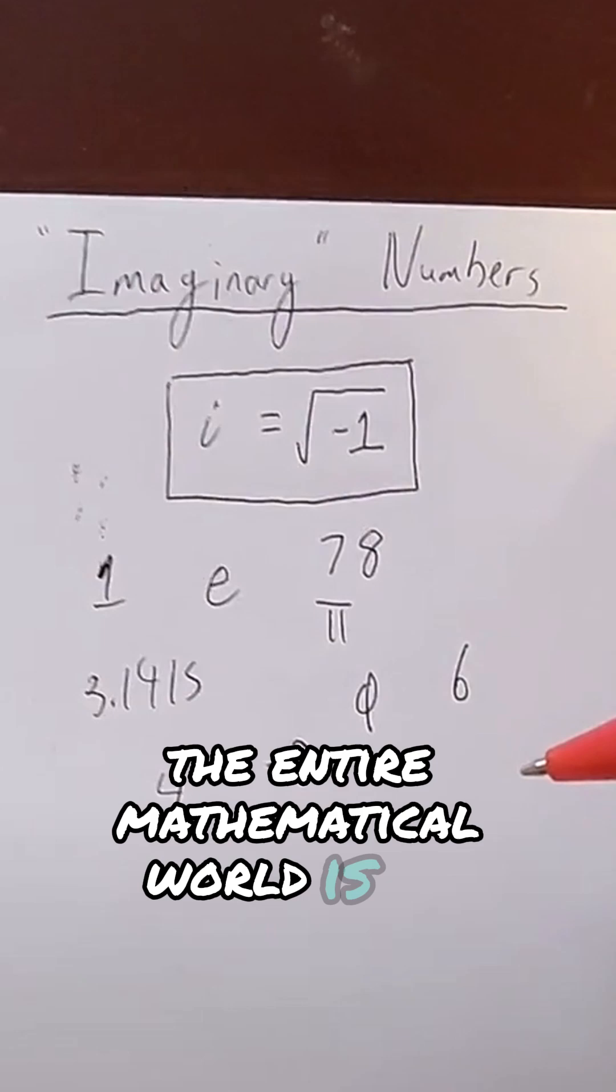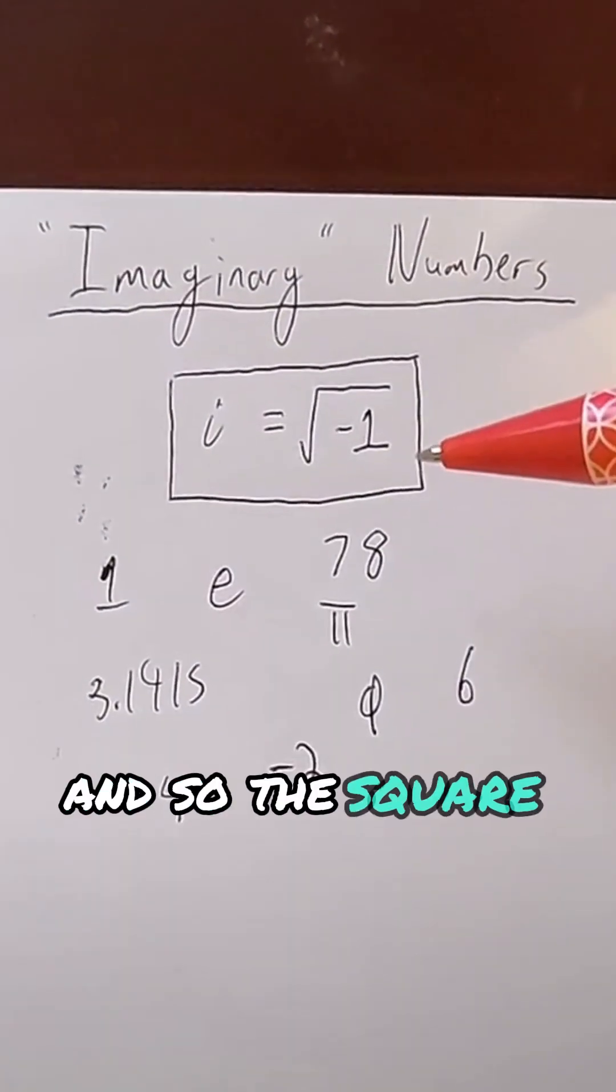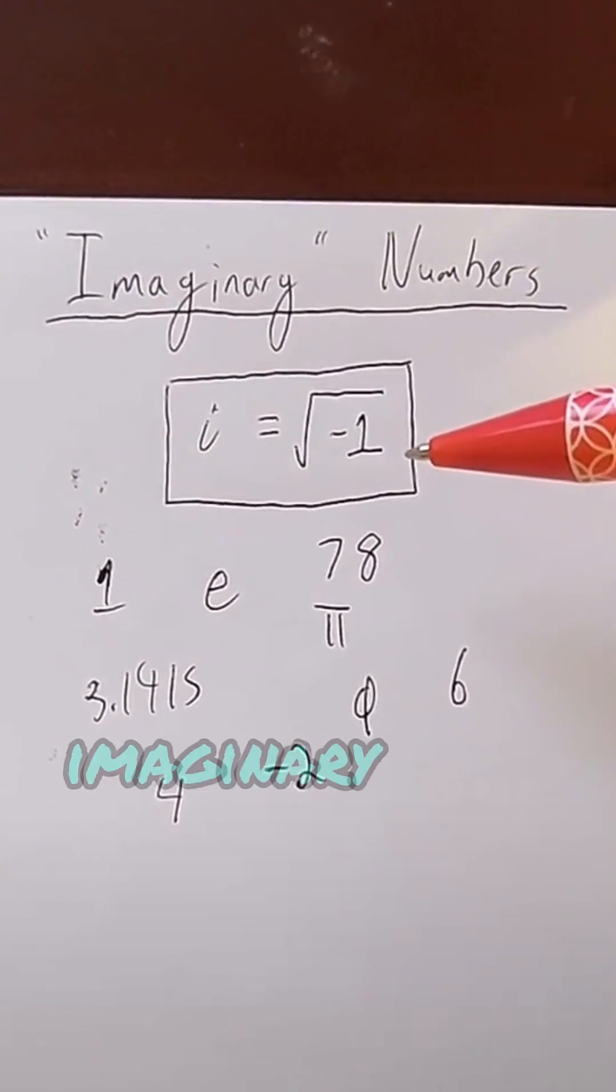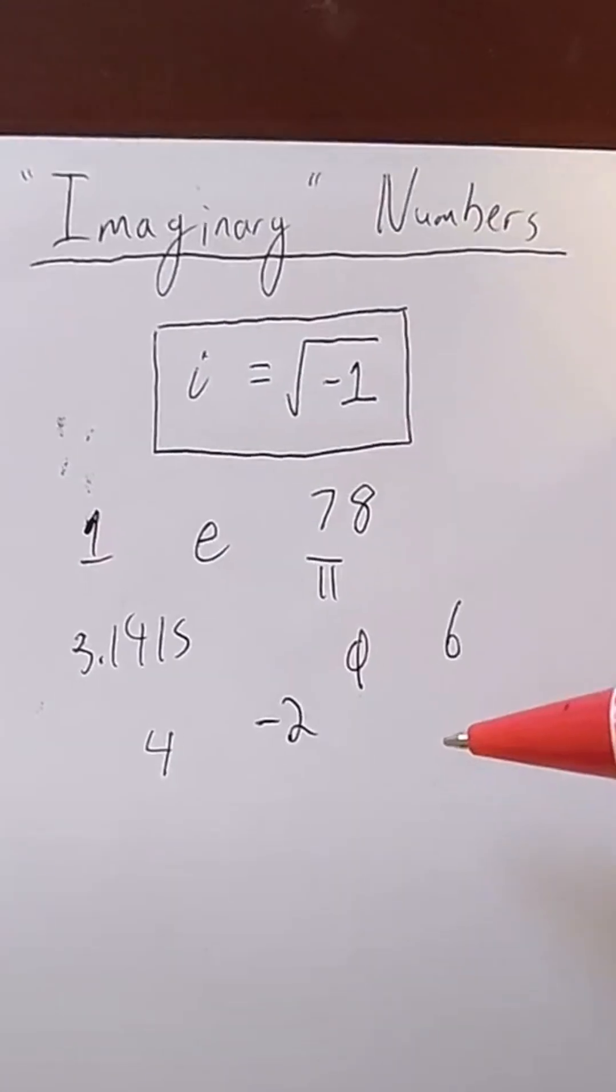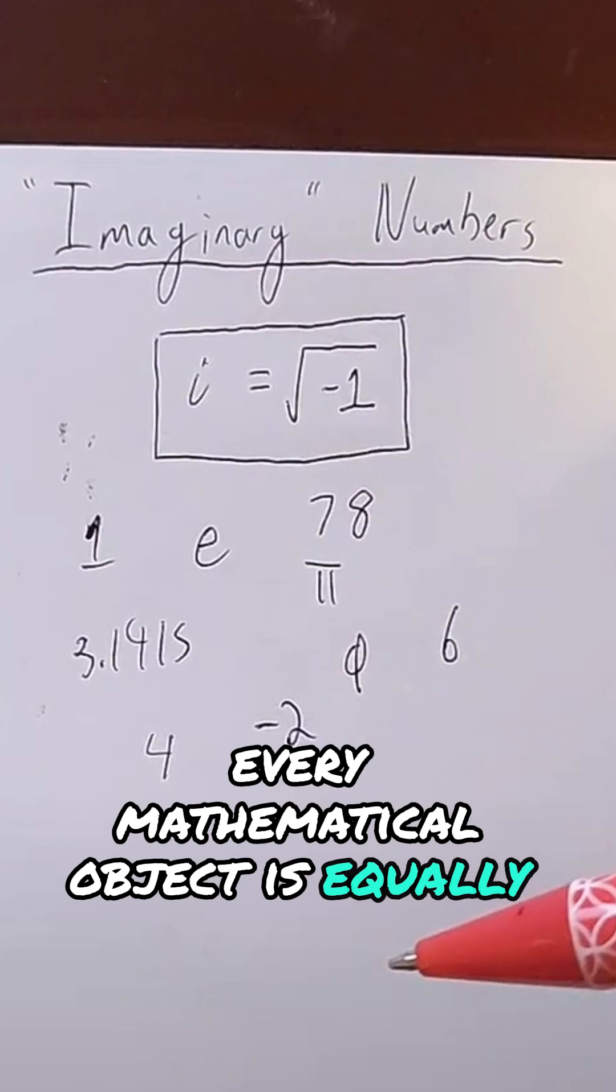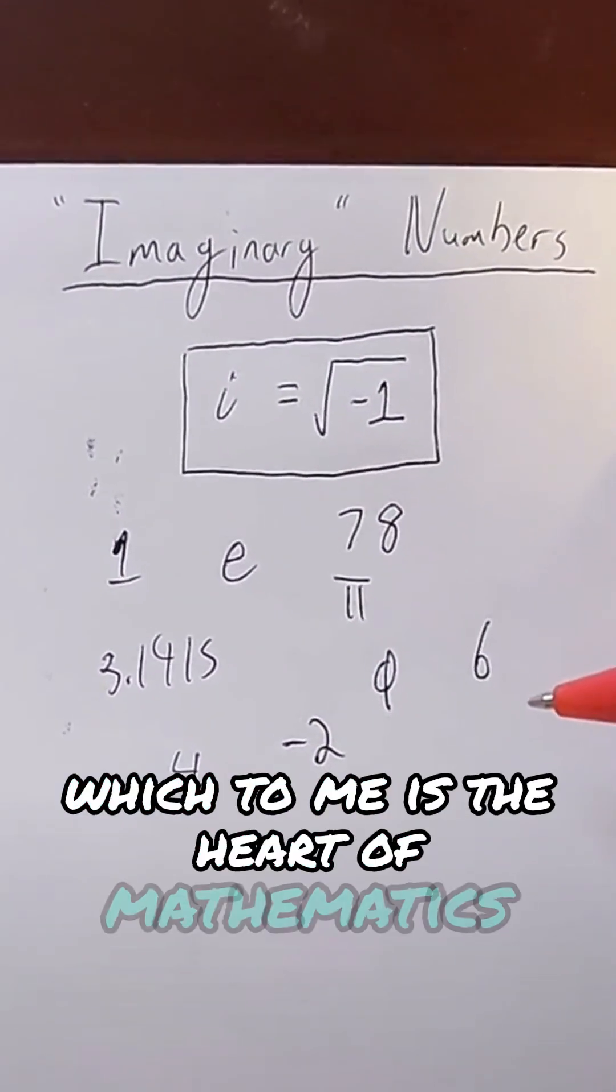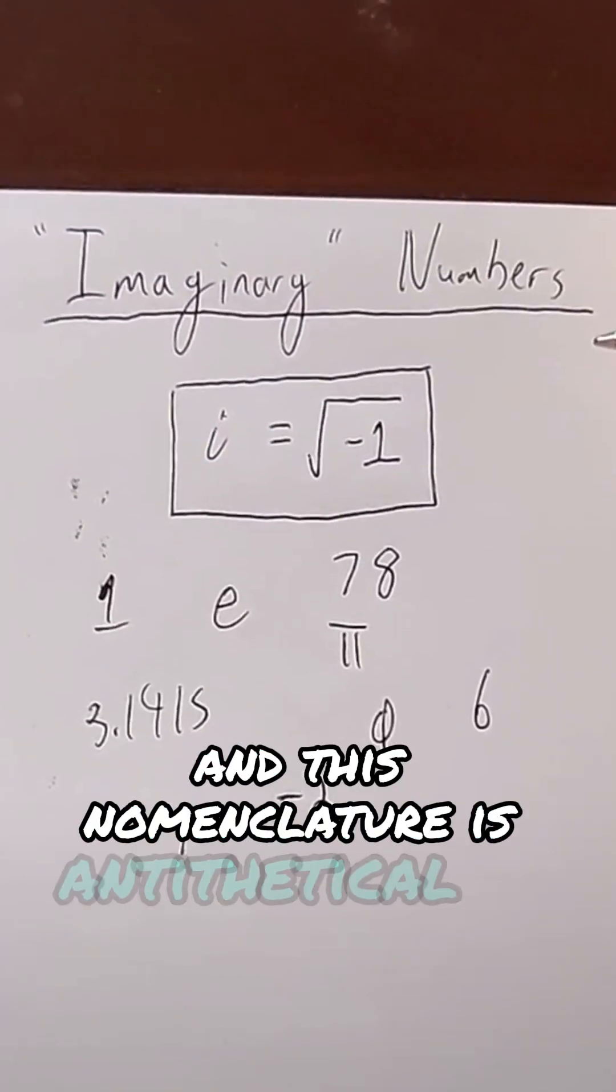The entire mathematical world is an imaginary thing. And so the square root of negative one is not uniquely imaginary when compared to something like 78 or 6. Every mathematical object is equally imaginary, which to me is the heart of mathematics. And this nomenclature is antithetical to that.